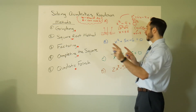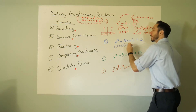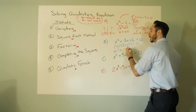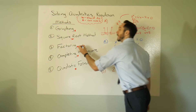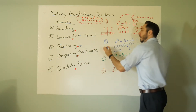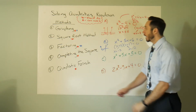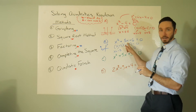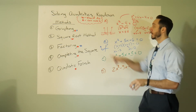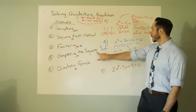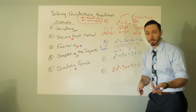Looking at the blue case: when you have a trinomial that's specifically factorable — what two numbers multiply to 6 and add to 5? Three and two, so you get negative 3 and negative 2. When you have a factorable trinomial, factoring is the winner. Graphing does work too. Square root method does not work because you have a linear term — taking the square root of a linear term is not something you want to deal with.